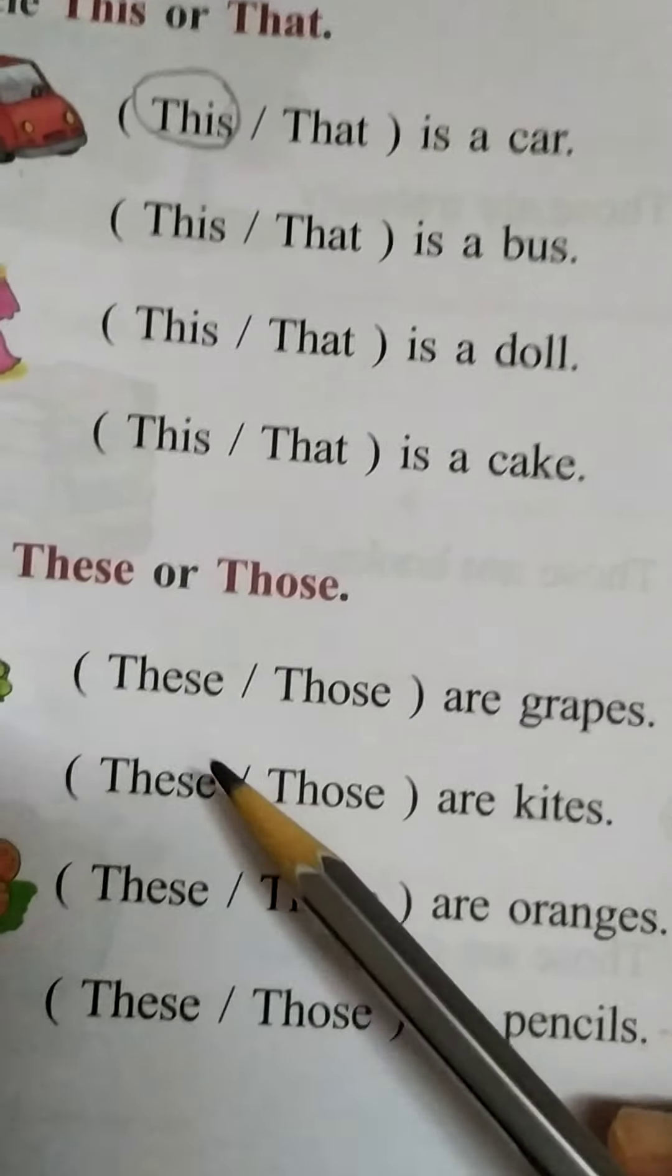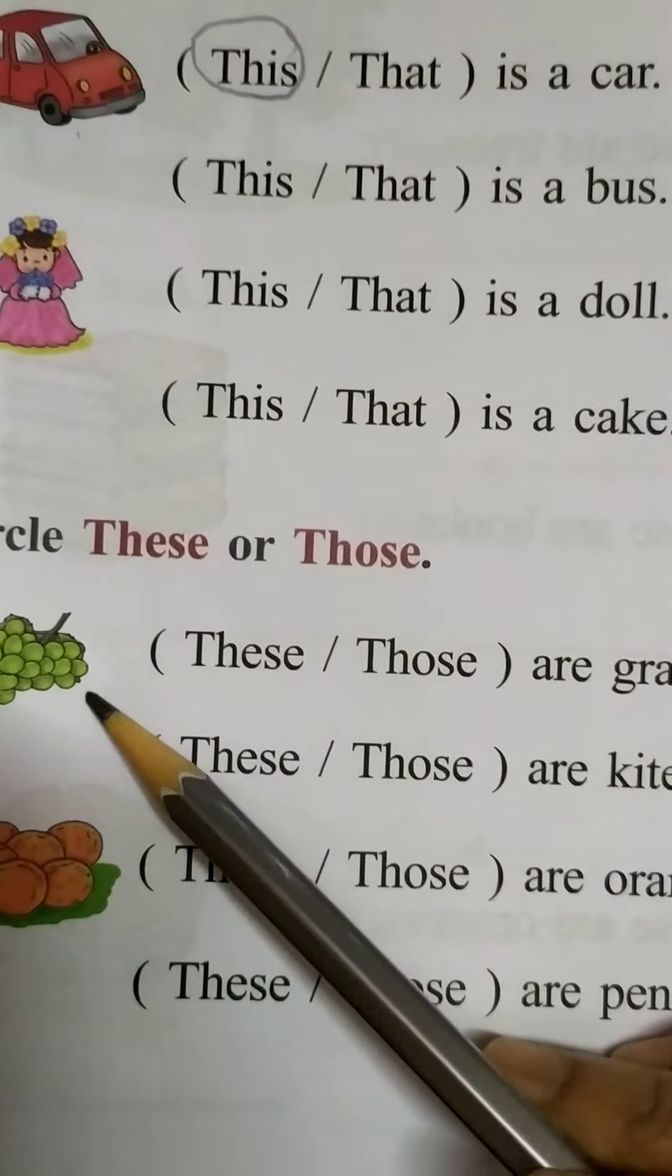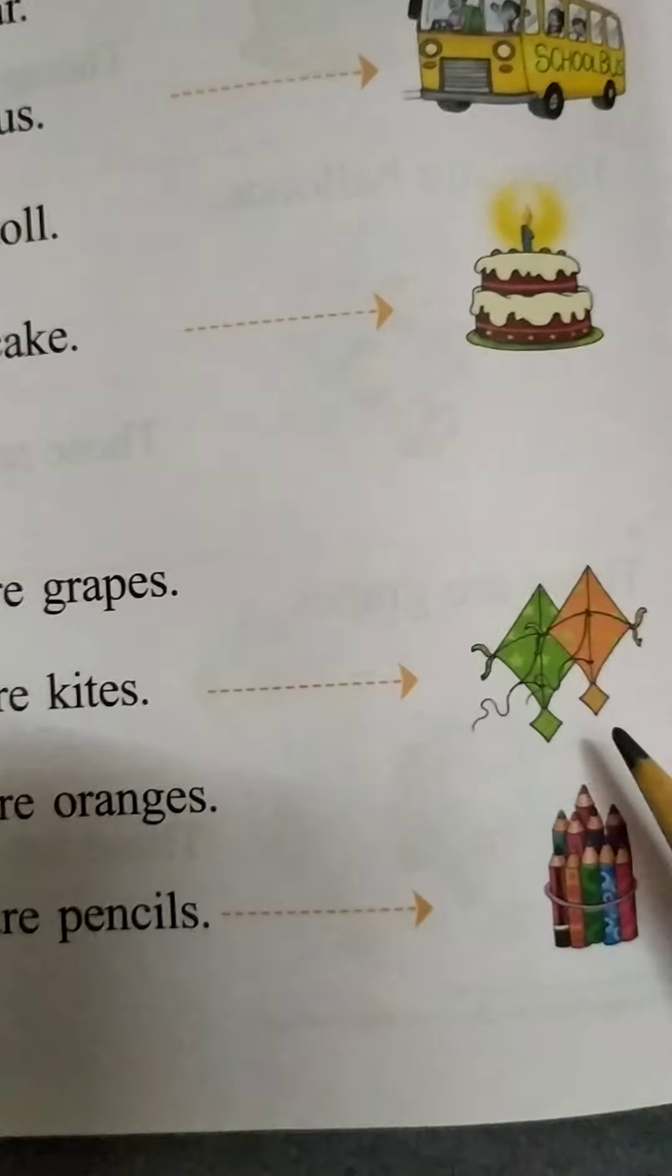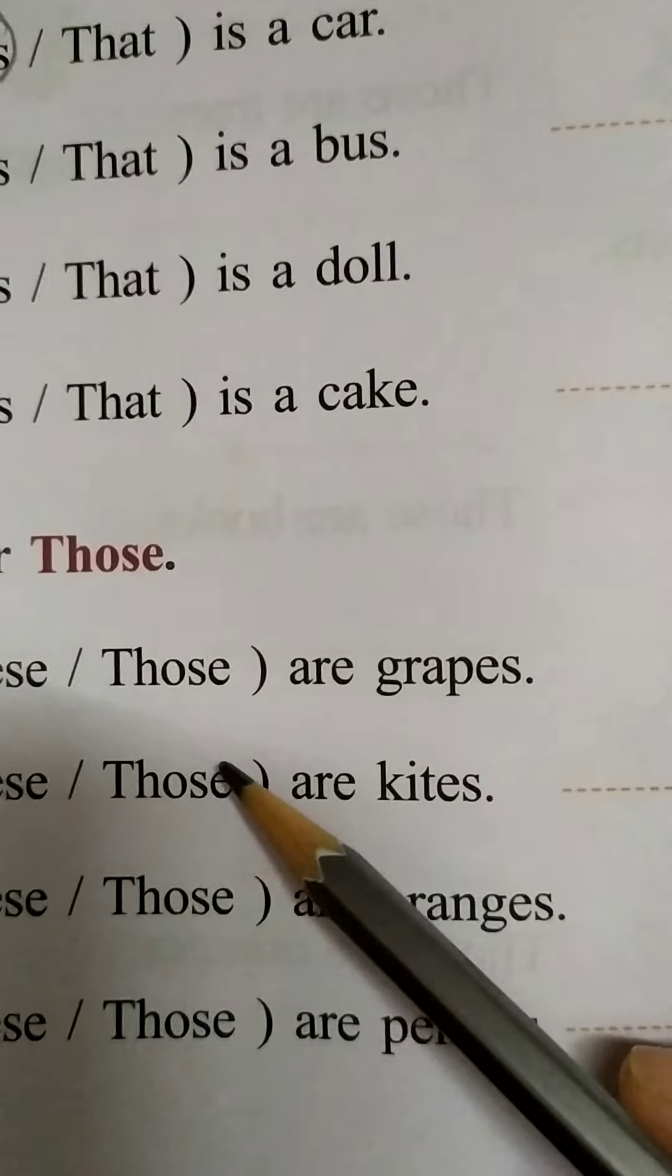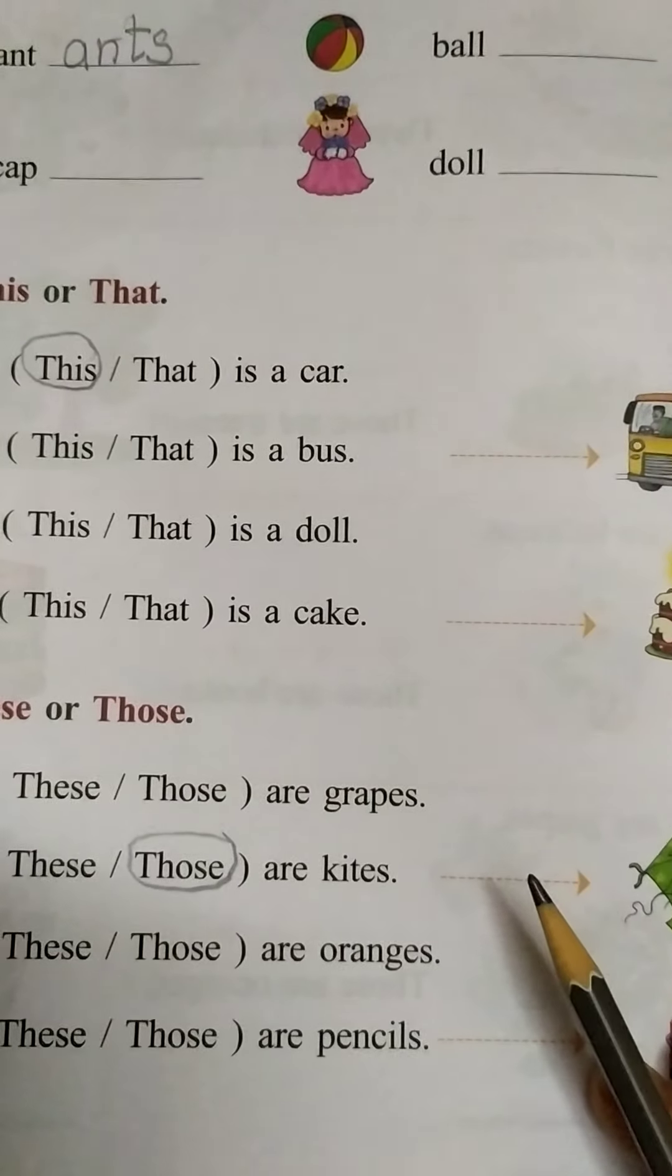Okay? So, next one children. These or those. Here these are near to us. And here far to us. So, you need to circle those. In this way complete this page children.